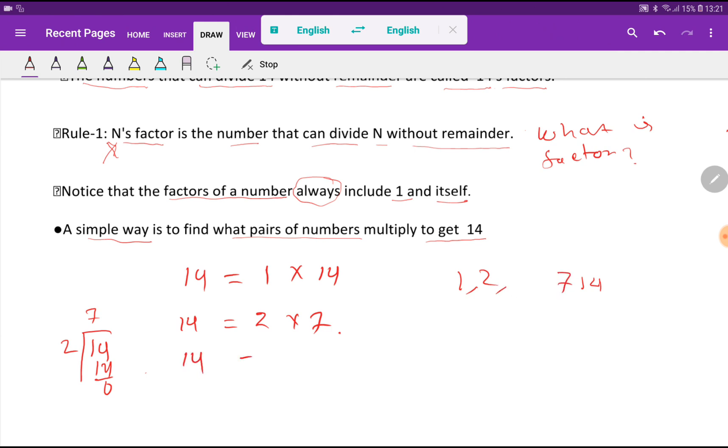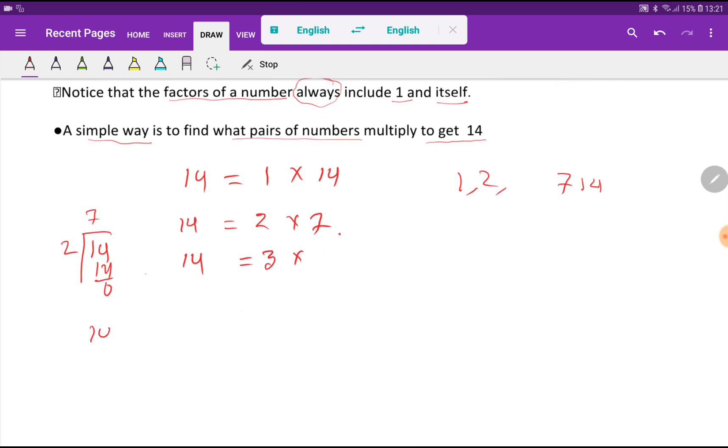Now we have to take here 3. So what number will come here? Let me divide 14 by 3. So, you will get remainder 2 if you divide 14 by 3. That is why 3 is not your factor. Because 14 is not completely divisible by 3. Since you are getting remainder.